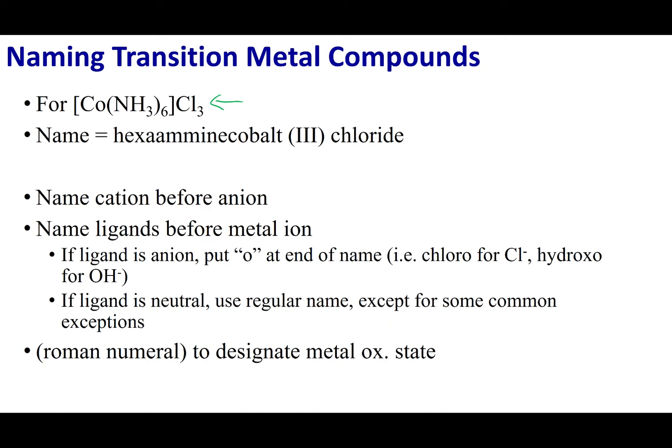What's new in this section is how to name the complex ion itself. You're going to list the ligands first, followed by the metal ion. If the metal is in the cation, simply use the metal ion's name — that means the metal's name followed by the oxidation state in Roman numerals. In this case we have cobalt in the 3+ oxidation state, so we write cobalt(III).